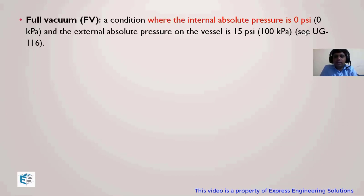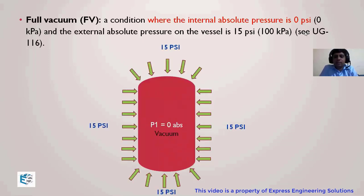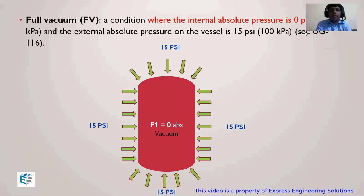Let's read the definition one more time: full vacuum is a condition where the internal absolute pressure is zero and the external absolute pressure is 15 psi. If we look at this figure, from outside there is 15 psi pressure, which is nothing but the atmospheric pressure, and there is zero absolute pressure inside that vessel. This condition will be called the full vacuum condition.